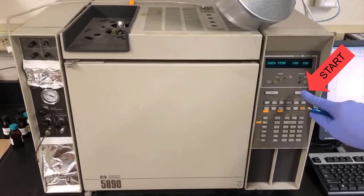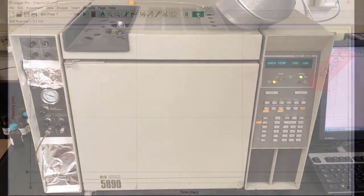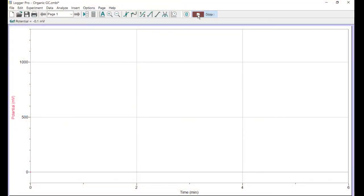Immediately after injecting the sample, press the Start button on the GC, and then press the Collect button on the Logger Pro software. Now the run has started and you're collecting data. You can see the chromatogram trace being drawn out at the baseline as a red line. Time is sped up for this video. The actual run will take 6 minutes.